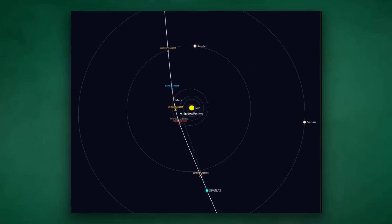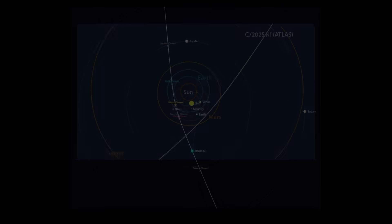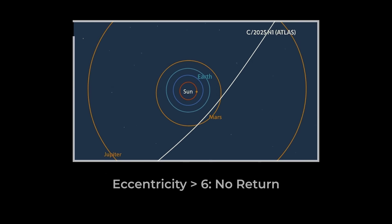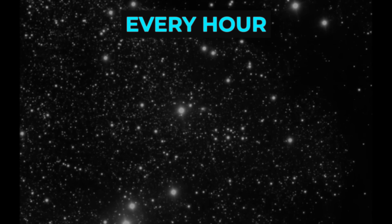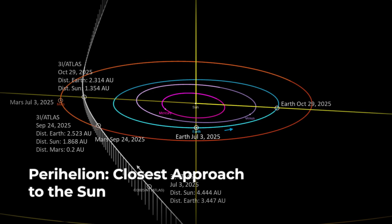3I/ATLAS is on a hyperbolic path. Its eccentricity, greater than 6, means it is not coming back. This is a one-way pass through the solar system, and every hour counts. The numbers are locked in.